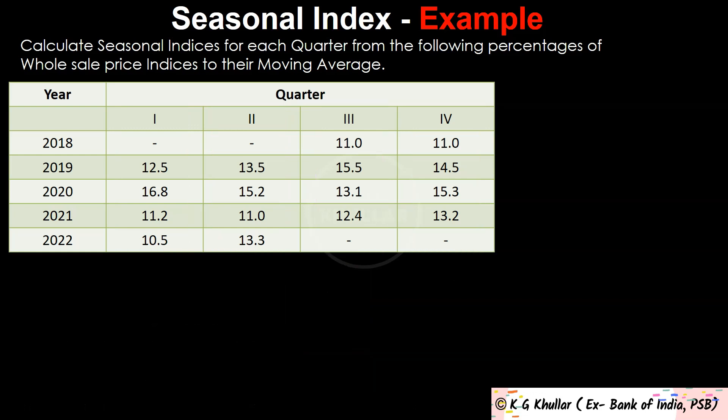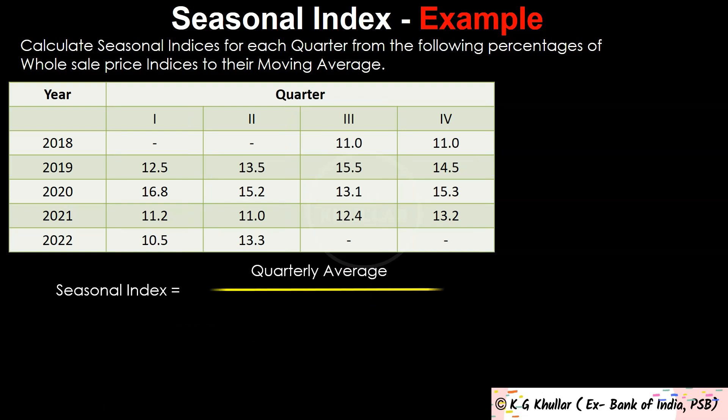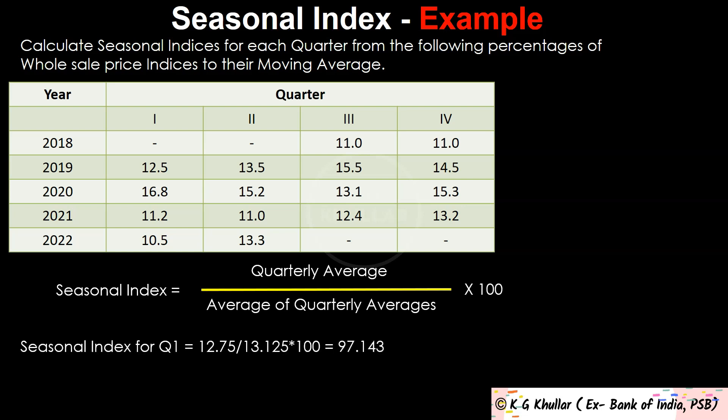Seasonal index for quarter 1 is 12.75 divided by 13.125 multiplied by 100, which equals 97.143. Seasonal index for quarter 2 is 13.25 divided by 13.125 multiplied by 100, which equals 100.952. Seasonal index for quarter 3 is 13.0 divided by 13.125 multiplied by 100, which equals 97.143. And finally, seasonal index for quarter 4 is 13.5 divided by 13.125 multiplied by 100, which equals 102.857.